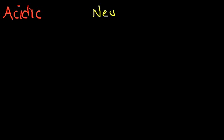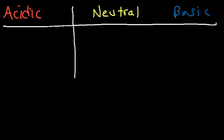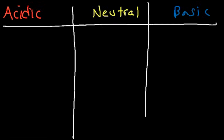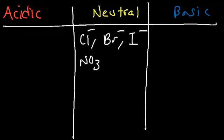With this information in mind, we can create a table. On the left side we're gonna have the ions that are acidic, in the middle the ones that are neutral, and on the right the ions that are considered to be basic.